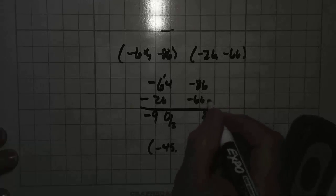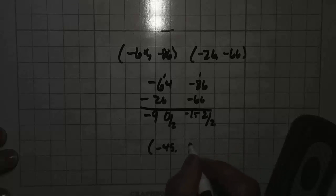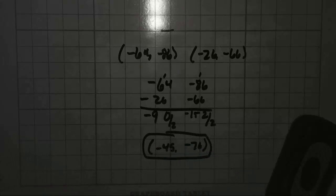Negative 86 and negative 66, that's negative 152. Divided by 2, negative 76. So your coordinates of your midpoint are negative 45, negative 76.